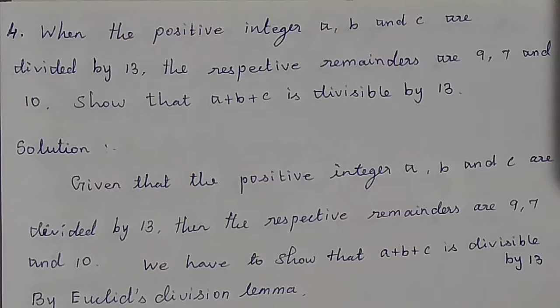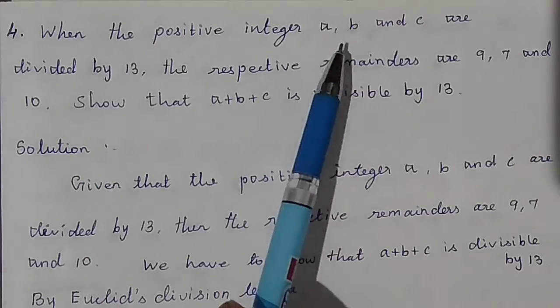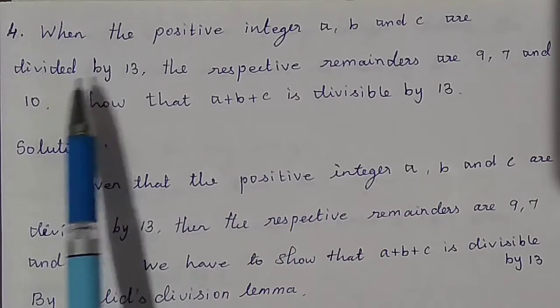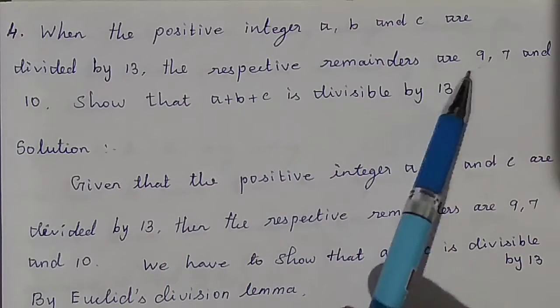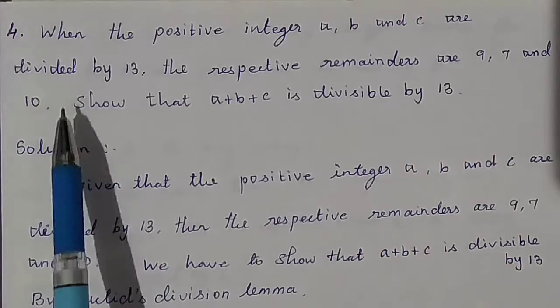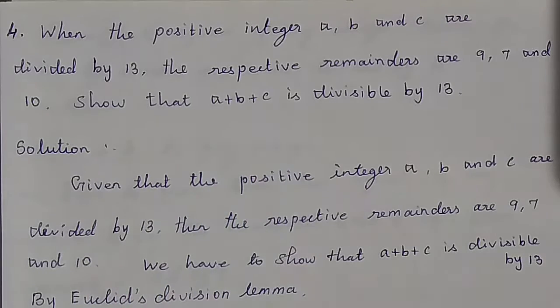Good morning students. In our numbers and sequences lesson, exercise 2.1, question 4: When the positive integers a, b and c are divided by 13, the respective remainders are 9, 7 and 10. Show that a plus b plus c is divisible by 13.